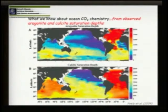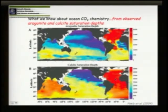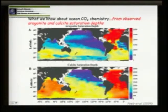If we map the distribution of this corrosive water, we can see the global impacts. In the North Atlantic it's still deep — about 2,500 meters for aragonite and 3,500 meters for calcite, except for the eastern equatorial North Atlantic. In the Pacific it's quite shallow, and very shallow all around Alaska.